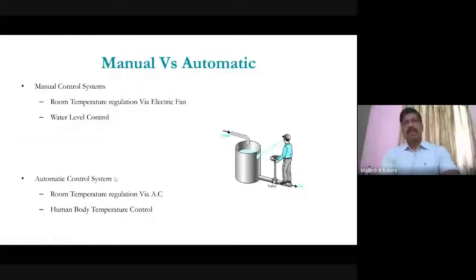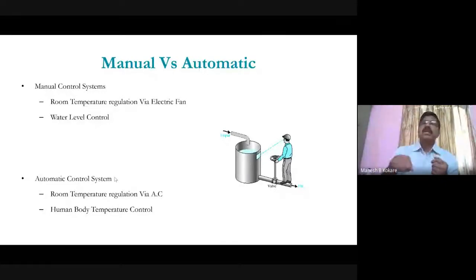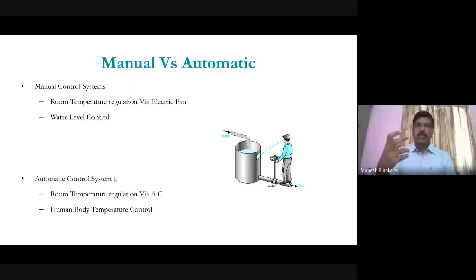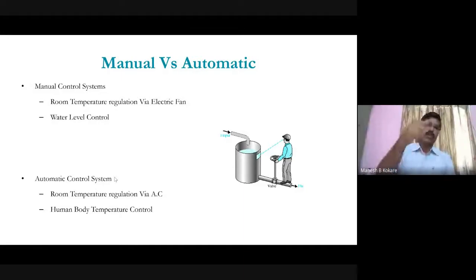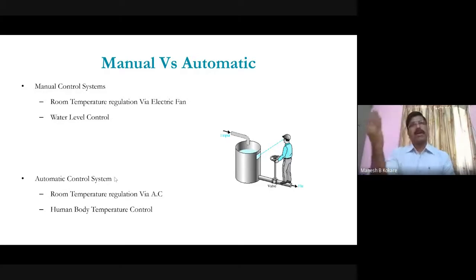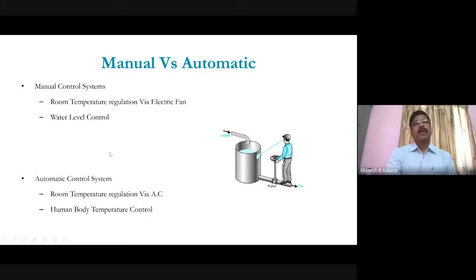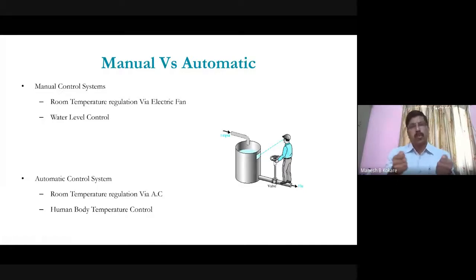Another distinction is between manual and automatic control systems. In a manual control system, there is an intervention of a human being to control some parameter. For example, to change the fan speed, a human has to go and change the regulator position, and according to that position, current changes and fan speed changes.